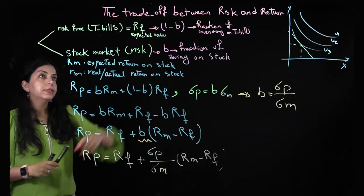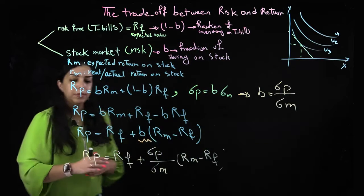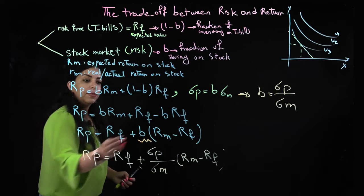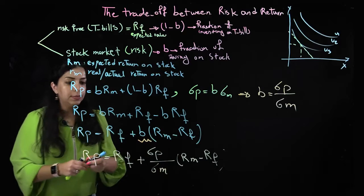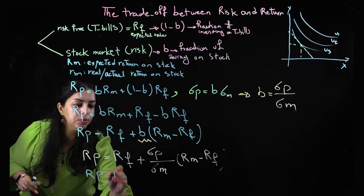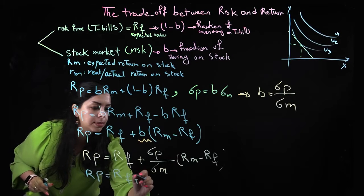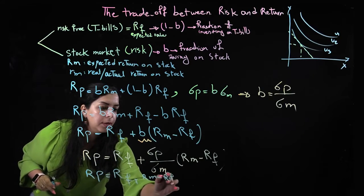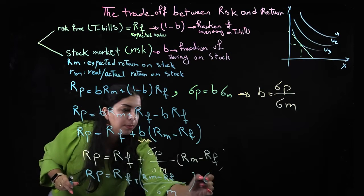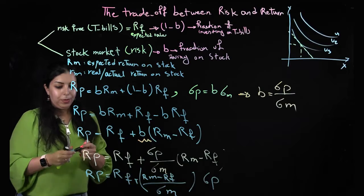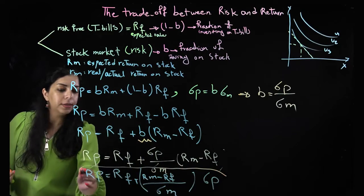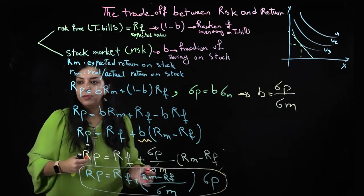If I want to discuss the trade-off between risk and return, it means I want to keep return on this side and risk on the other side. So I can rewrite this as rp equals rf plus rm minus rf divided by sigma m, and this whole thing multiplied by sigma p. So a very nice formula is appearing here.